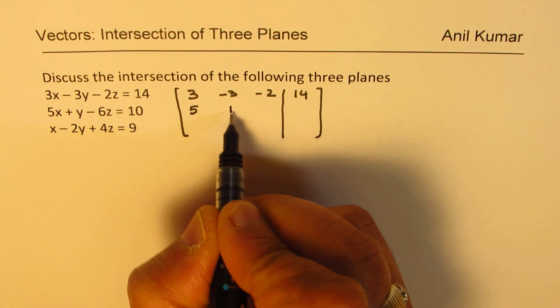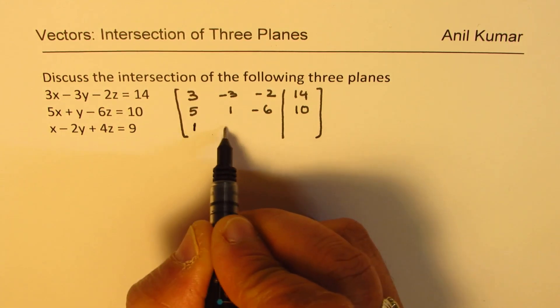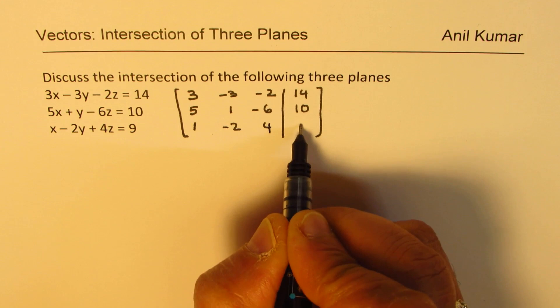So we get 5, 1, minus 6, 10 and then we have 1, minus 2, 4 and 9.